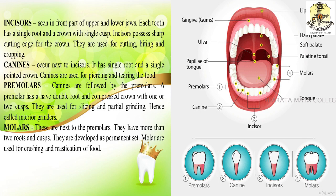The canine is found just next to the incisors, has a single root and a sharp crown, and is used for piercing and tearing flesh and food particles. Premolars follow the canines; a premolar has a double root with a compressed crown with one or two cusps and is referred to as interior grinders used for slicing and partial grinding. The last type is the molar, found next to the premolars, having more than one root and more than two cusps. They develop as permanent teeth and their main function is for crushing and mastication of food.